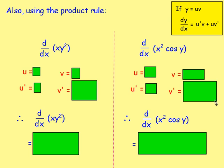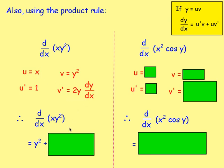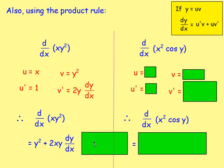Let's try a few more examples using the product rule. If we want to differentiate x times y squared with respect to x, you've got one function times another function, so you have to use the product rule. u is going to be x, and v is going to be y squared. u' is 1, and v' gives you 2y dy/dx. Using the product rule, the derivative is u'v plus uv' — so you get y squared plus 2xy dy/dx.